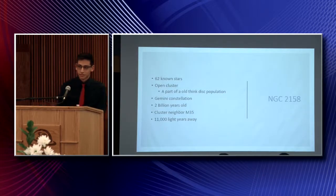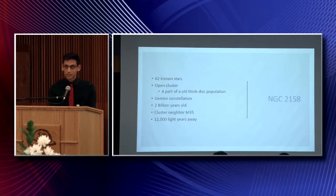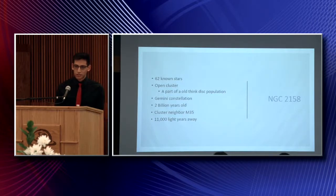My star cluster is NGC 2158. It is known to have 62 stars. It's an open cluster. Fun fact is that our sun, astronomers think that it came from an open cluster because the orbits are so crazy that at any moment in time a star can just be shot out of the orbit.